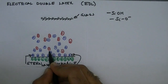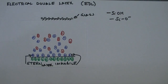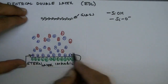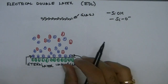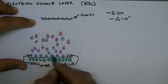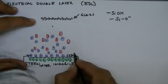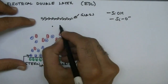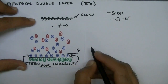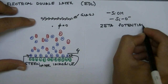Outside the stern layer we have a diffuse layer where there are more positive ions close to the surface and fewer negative ions. Due to this charge accumulation near the wall, a potential difference is created between the bulk solution and the region near the wall. If we take the potential in the bulk solution as zero, the potential just next to the stern layer is denoted by zeta and is termed the zeta potential.